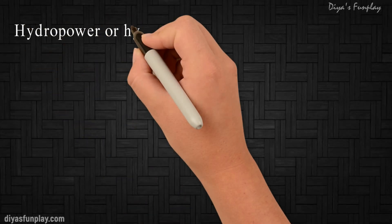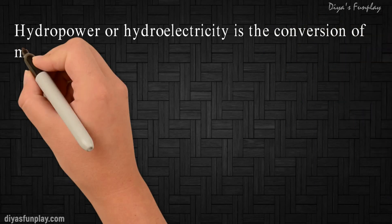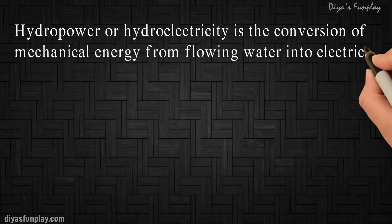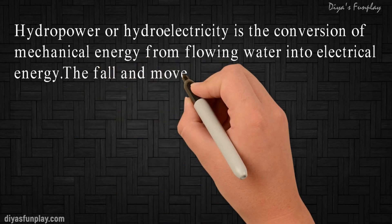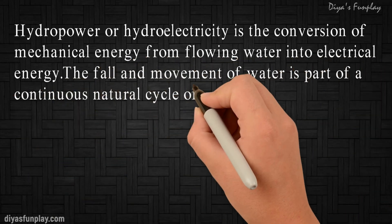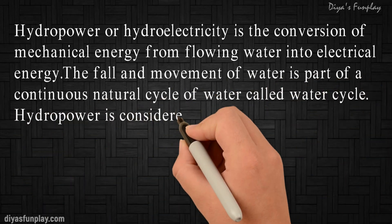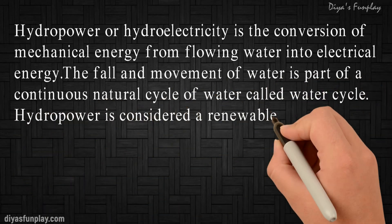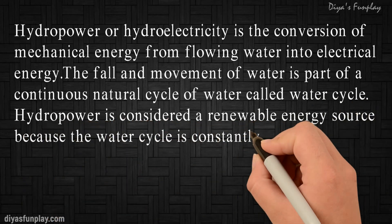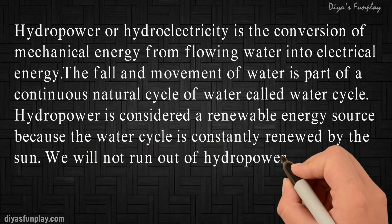Now let's see what is hydroelectricity and how is it generated. Hydropower or hydroelectricity is the conversion of mechanical energy from flowing water into electrical energy. The fall and movement of water is part of the continuous natural cycle of water called the water cycle. Hydropower is considered a renewable energy source because the water cycle is constantly renewed by the sun. We will not run out of hydropower as long as the water cycle continues.